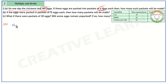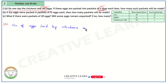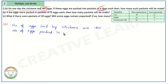Let's write here: number of eggs laid by chickens — total 180 eggs laid. From that, how many packets will be made we have to find out. Each packet consists of 6 eggs. Let's write: number of eggs packed in each packet are 6 eggs.